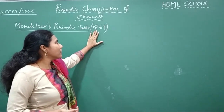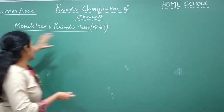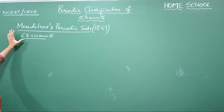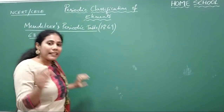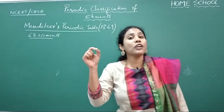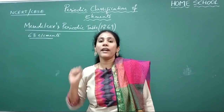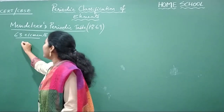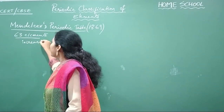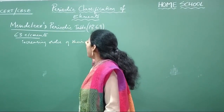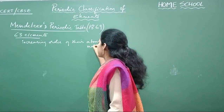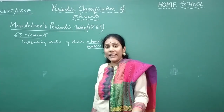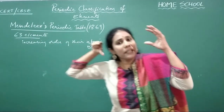Mendeleev's periodic table was introduced in the year 1869. During Mendeleev's time, there were 63 elements discovered in total. His periodic table includes the arrangement of elements in the increasing order of their atomic masses. This is a very important point — all scientists up to and including the 45th periodic table arranged elements in the increasing order of their atomic masses.